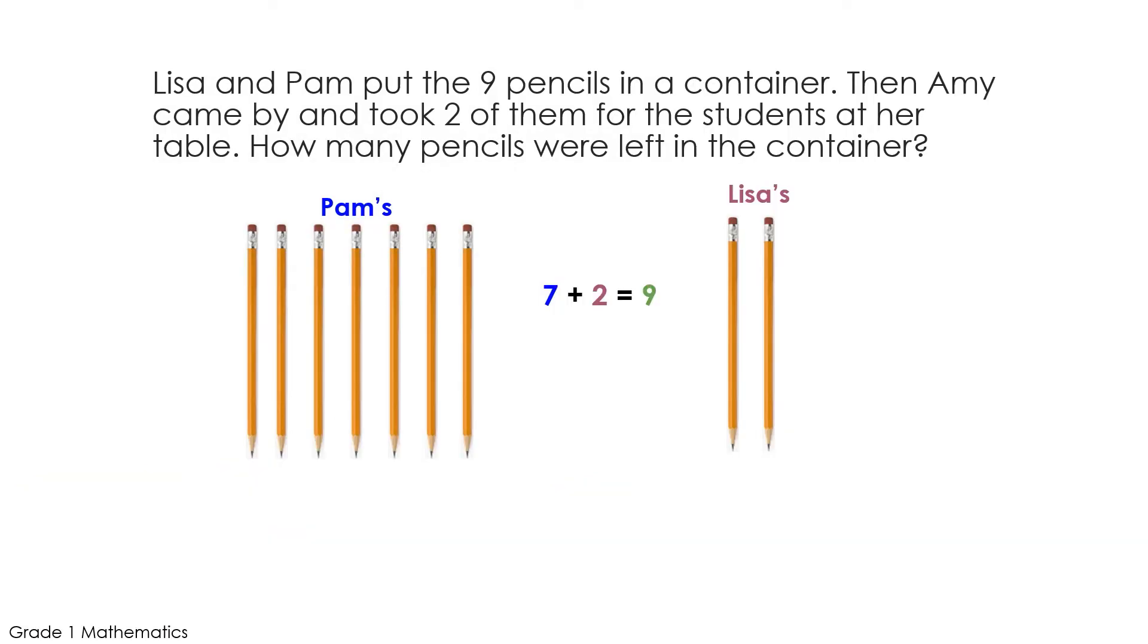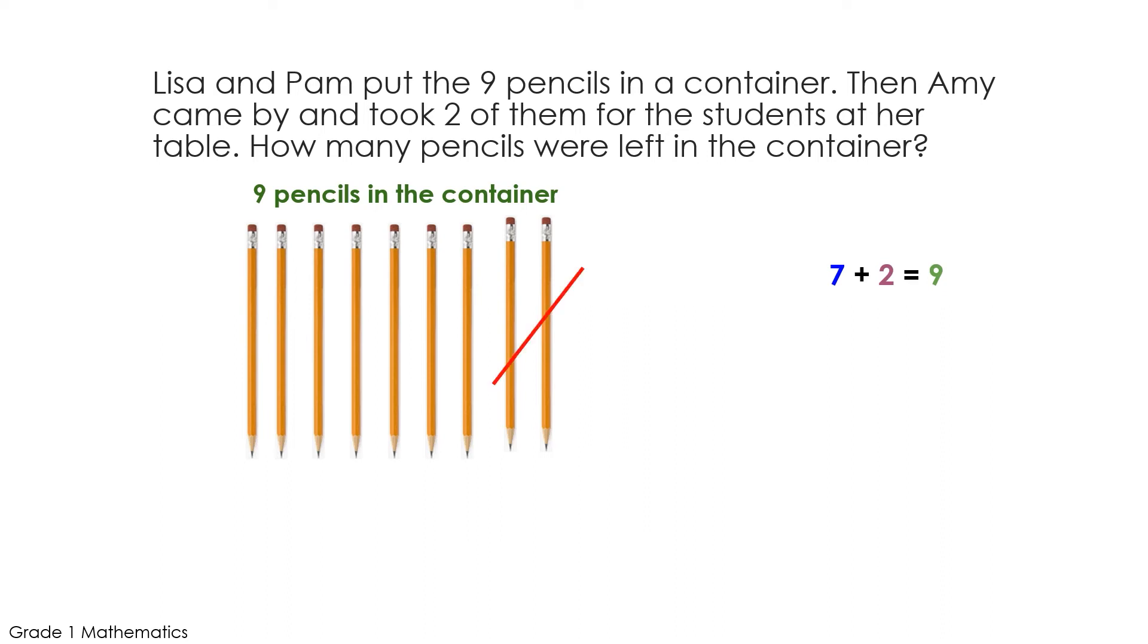Before we saw that Pam had seven pencils and Lisa had two pencils to make a total of nine pencils. If there are nine pencils in the container and we take away two pencils that Amy took for the students at her table, now we are left with how many pencils? We can use the information from our last problem to solve this problem without even having to count the pencils that are left. Before we learned that seven pencils plus two pencils is nine pencils. This will help us solve nine pencils minus two pencils is the same as how many pencils? That's right, seven pencils.